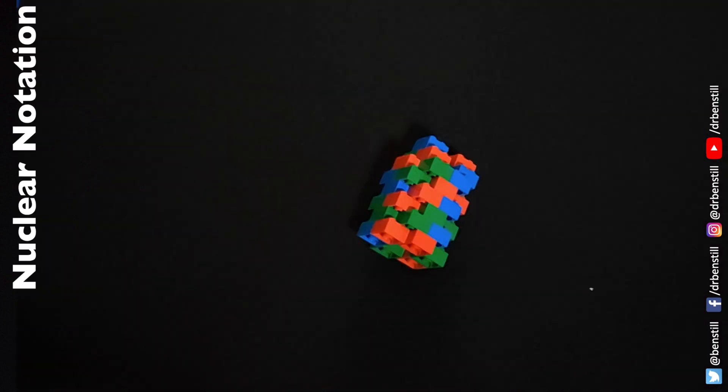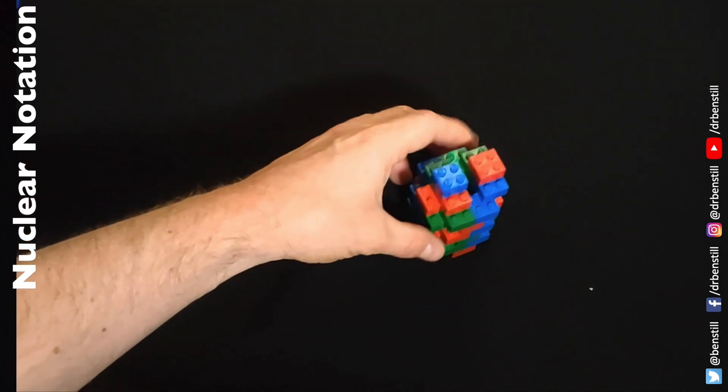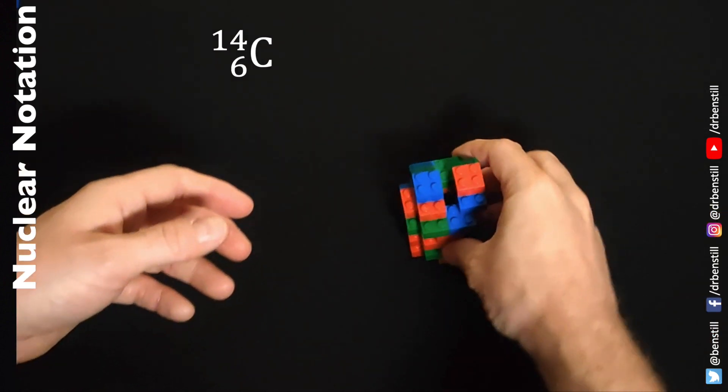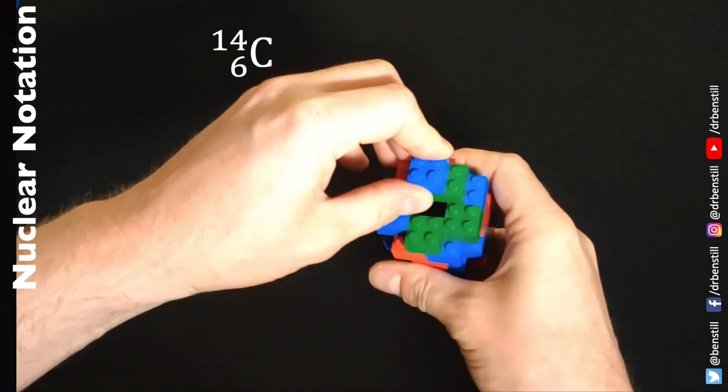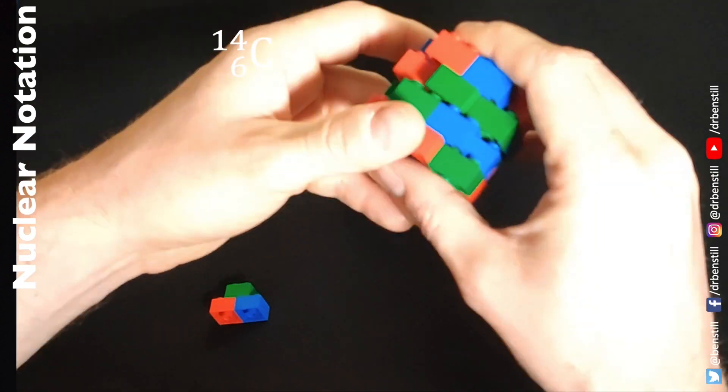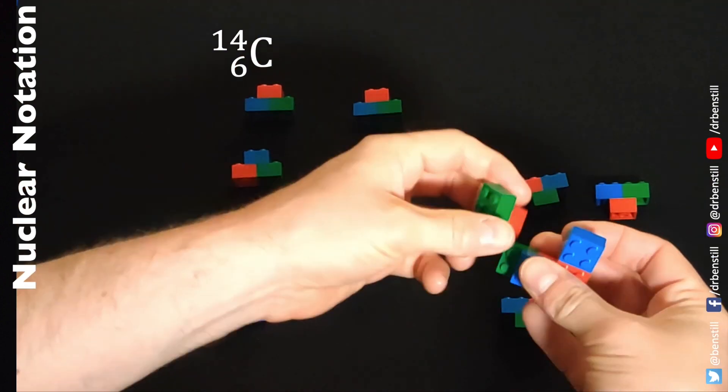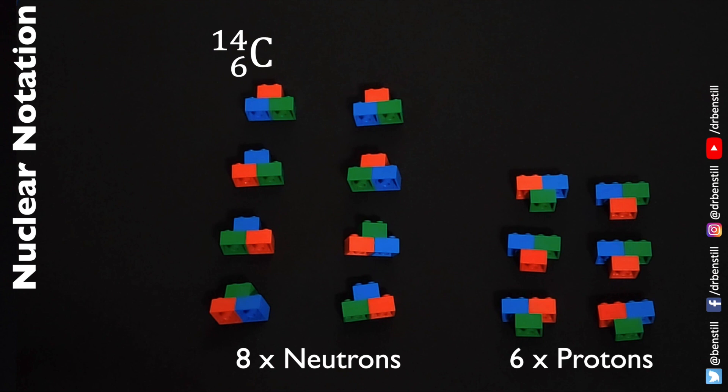Now before we go any further I just want to mention a little bit about nuclear notation. This is a nucleus of an atom. In fact this is a nucleus of a carbon-14 atom. This isotope of carbon is very special. It's responsible for carbon dating. But if we break it apart into its constituent particles we see the carbon-14 is made from six protons and eight neutrons. The two numbers that are written next to the element symbol of carbon give us a shorthand notation which tells us how many protons and neutrons there are. The top number is known as the nucleon number. And that tells us the total number of protons plus neutrons in the nucleus of that atom. And then the bottom number is the proton number. That tells us how many protons there are in the nucleus of the atom. With the two numbers combined we can work out the exact number of protons and the exact number of neutrons in the nucleus.